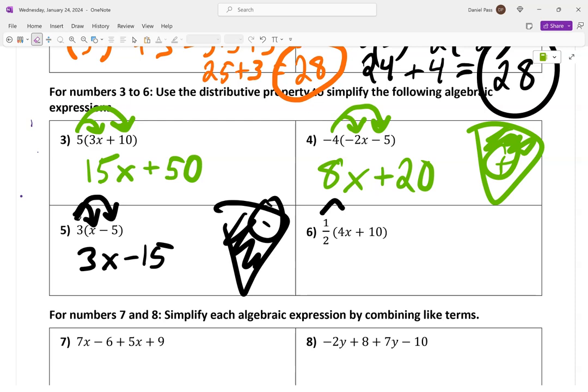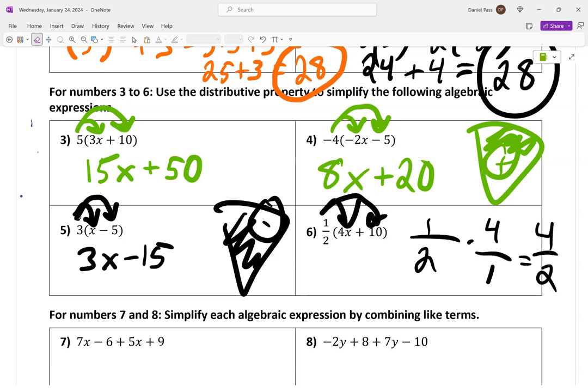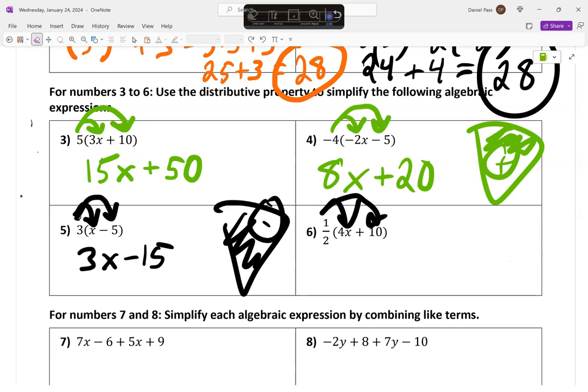Next one. We're doing one half of both of these. Now you could do the fractions like this: one half times four over one. Four divided by two is two. Or you could just think half. Take half of it. So half of four is? Two. Two X. And half of ten? Five. Five. That's it. Okay, cool.